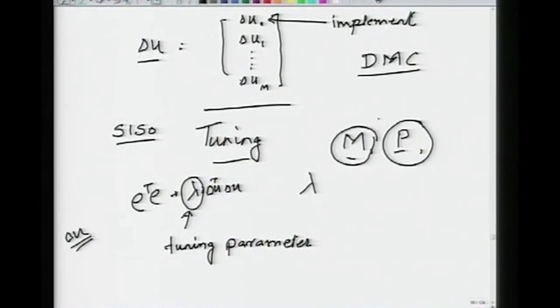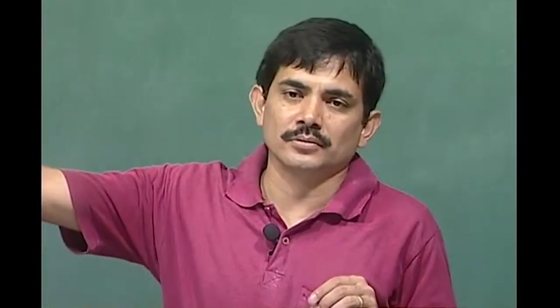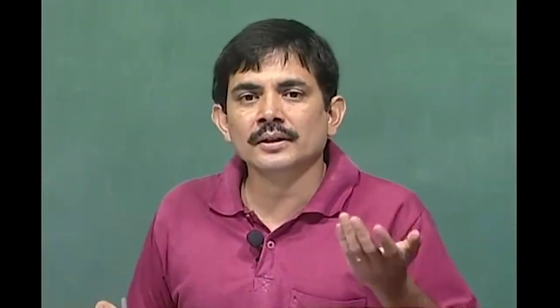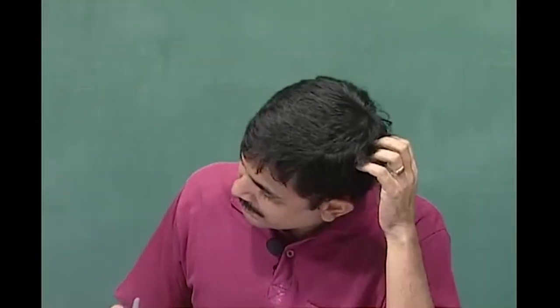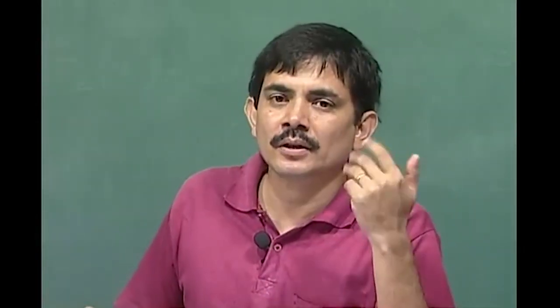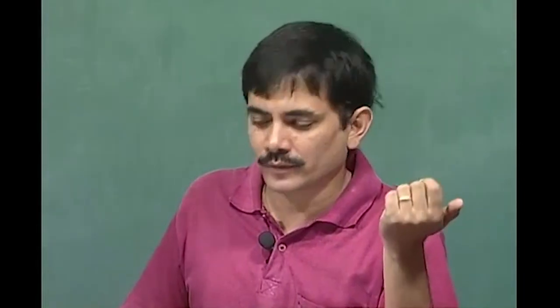Similarly for the prediction horizon P — the same trade-off applies. Note that P would typically be much larger than M. You should predict over at least one time constant: if the step response takes 30 minutes to line out, you should predict for at least 10–15 minutes. M would typically be one-half, one-third, or even one-fifth of P.